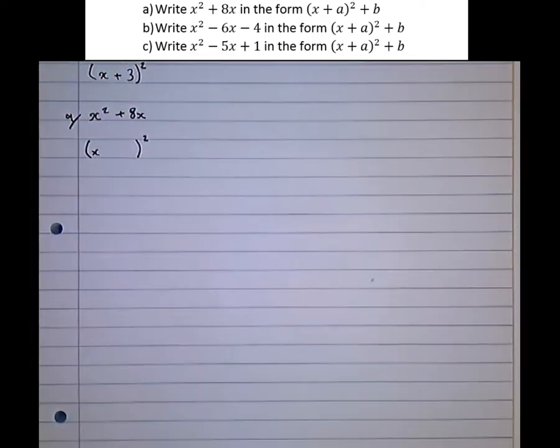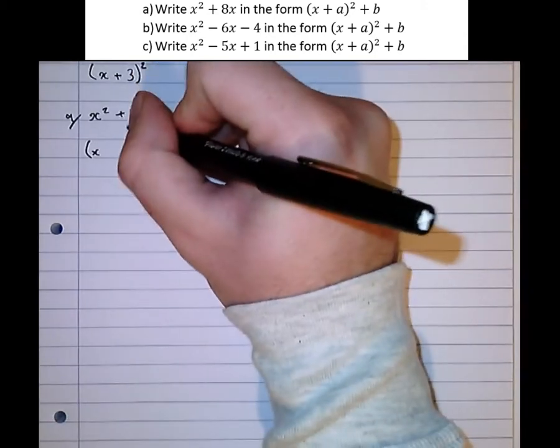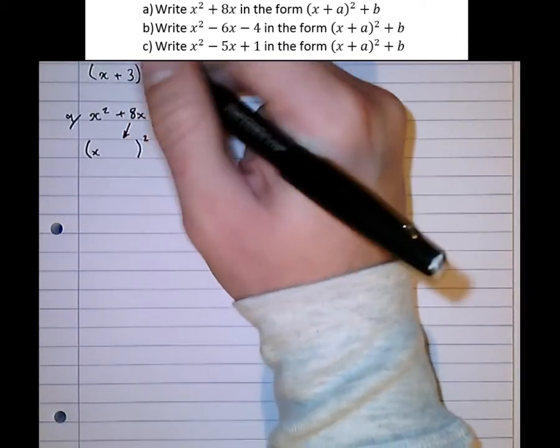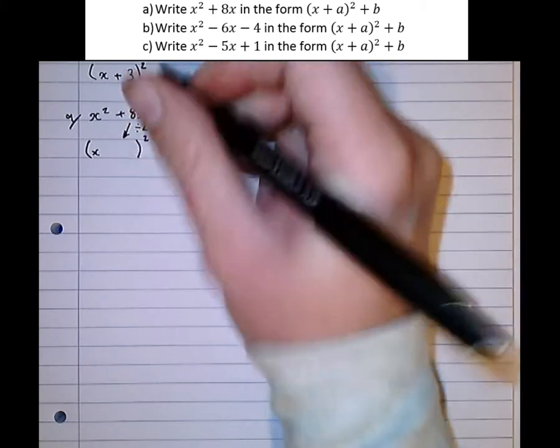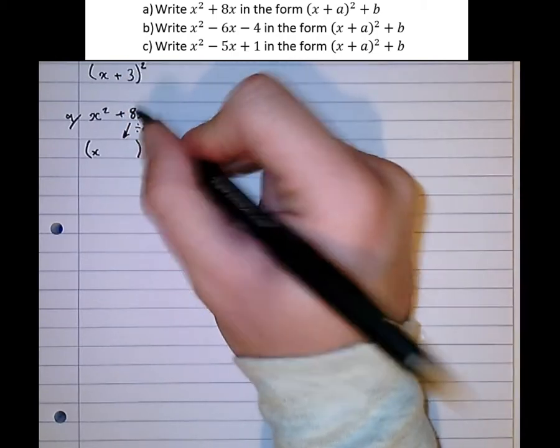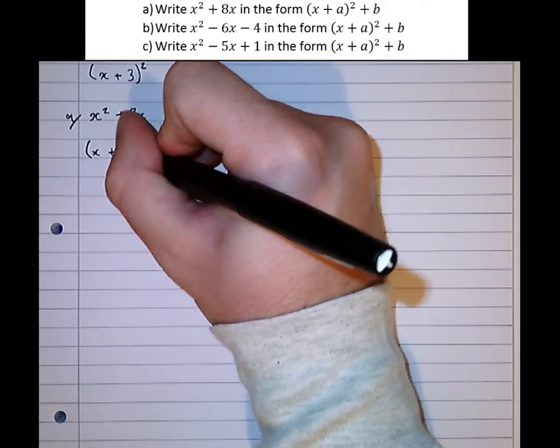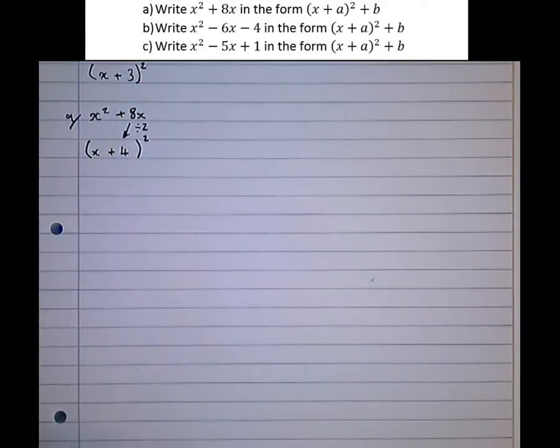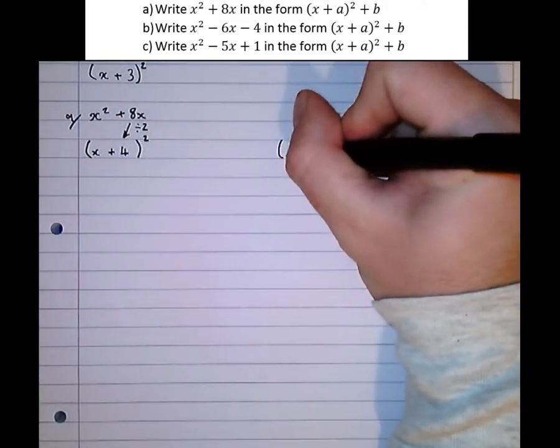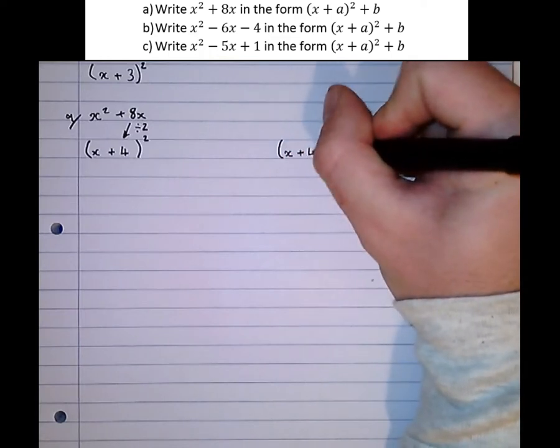So there's our empty square bracket. Now the number that goes in the square bracket is always half of this number here in front of the x. So half of 8 is 4. x plus 4 squared and we're most of the way there. Now let's just check our answer of x plus 4 squared.